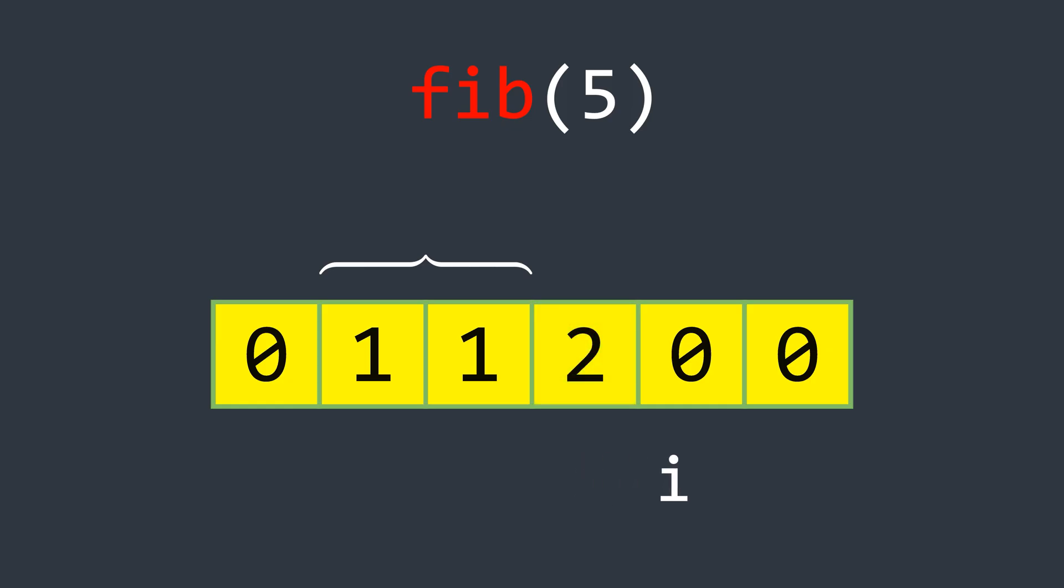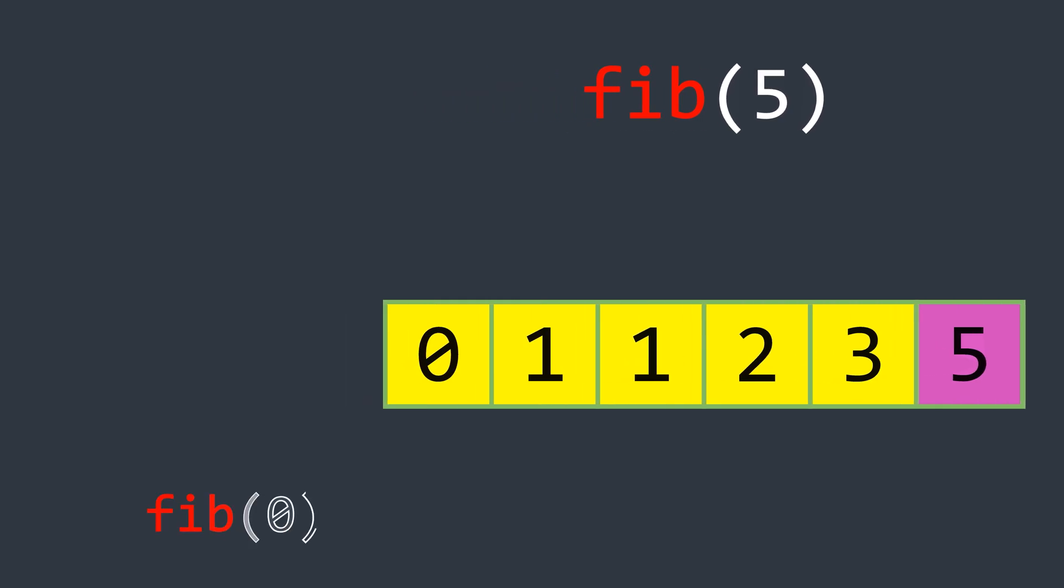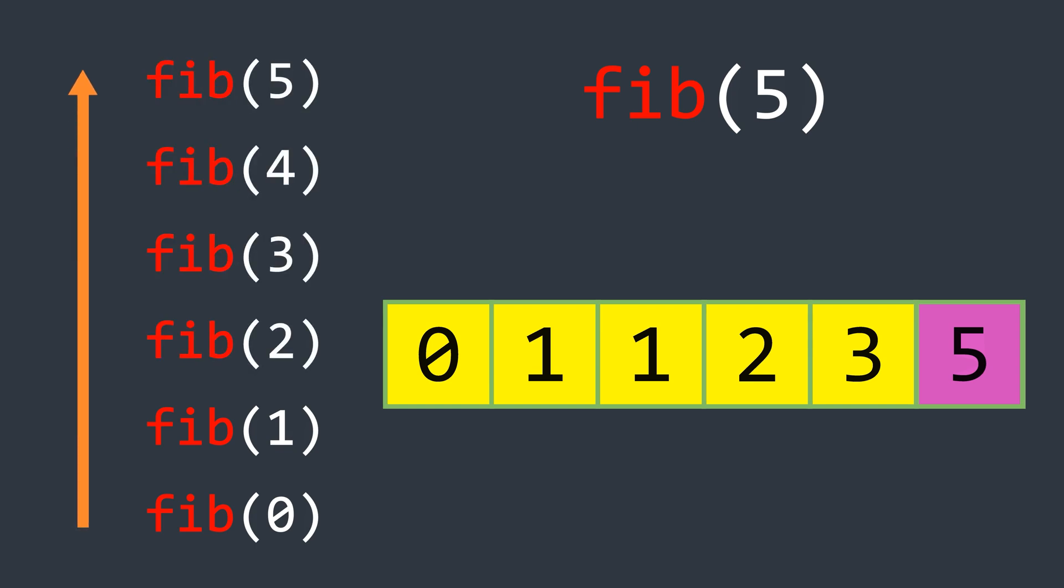This method is iterative and often more intuitive than memoization. Notice one thing that we started from Fib of 0 and then 1 and all the way up to n. And this is why this approach is called the bottom-up approach.